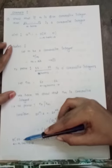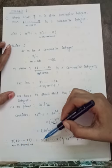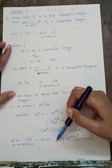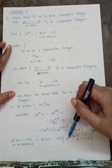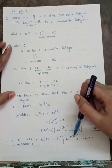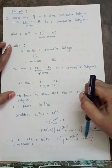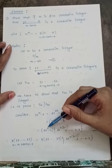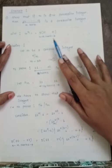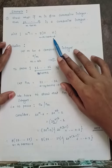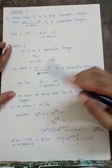So 9 · (11…1 with m terms) = 9 · (11…1 with a terms) · (10^(ab−1) + … + 1) / (10^a − 1). Dividing both sides by 9 gives: 11…1 (m terms) = (11…1 with a terms) · r, where r = (10^(a(b−1)) + … + 1).